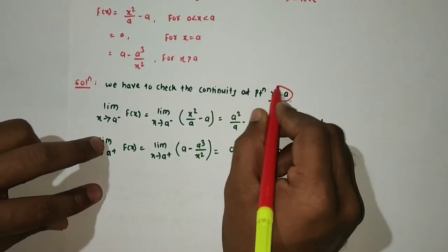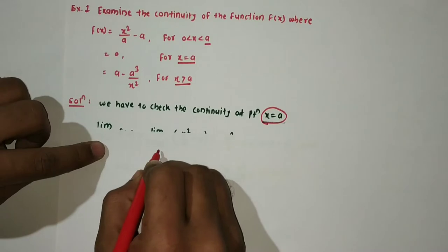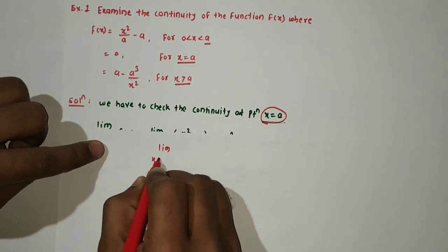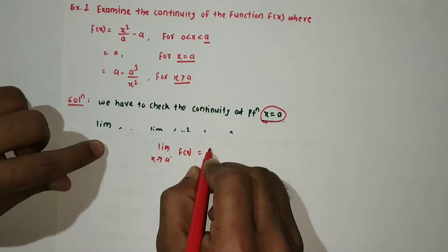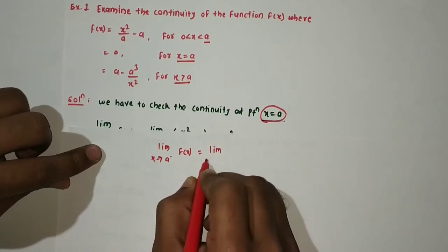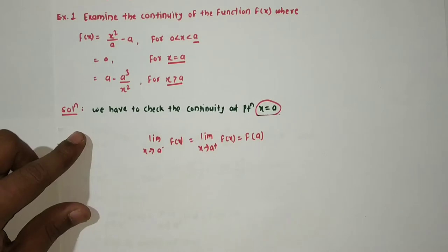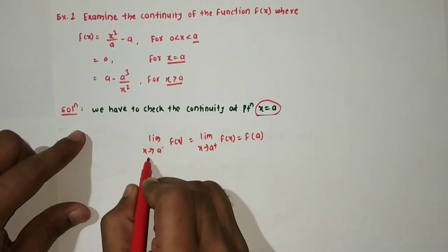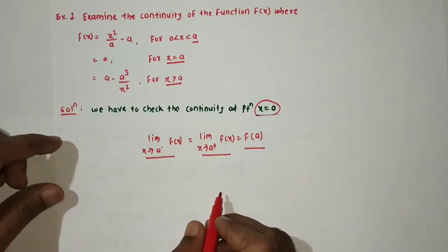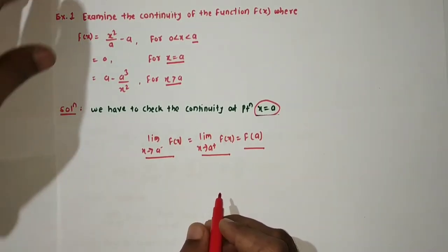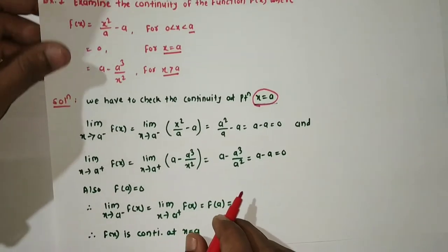We check continuity at the point x = a. To check continuity at x = a, we need to verify that the left hand limit equals the right hand limit equals the functional value. That is: left hand limit = right hand limit = f(a). This is the condition we need to verify at the point of interest x = a.